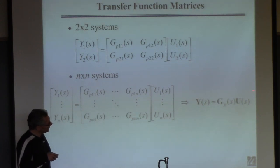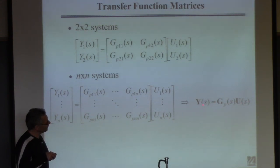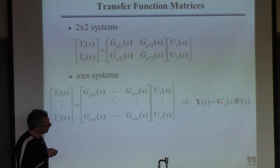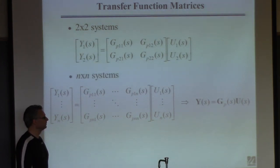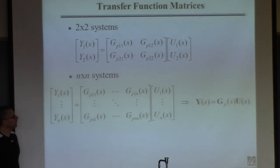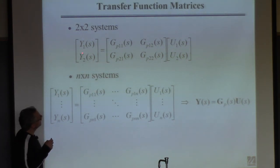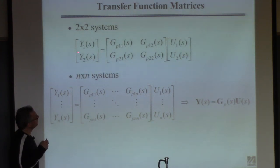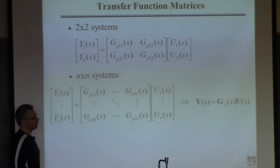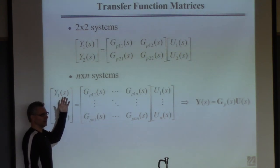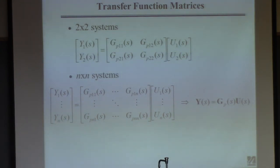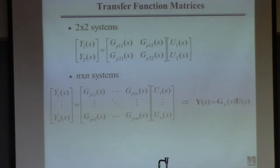We'll focus a lot on the 2x2 case because larger problems become too onerous for exams. We'll develop methods for the general case but use simple 2x2 examples. In bold notation: bold means vectors and matrices, so bold Y is a vector of outputs, bold U a vector of inputs, and P is the matrix of transfer functions.